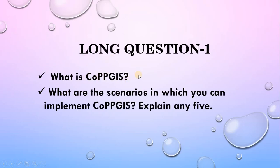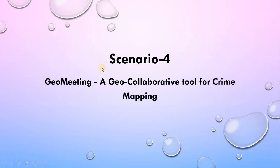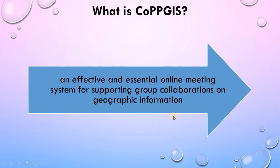My first question is about what is CopyBJS — I have discussed it already in another video, so in this video I am going to talk about the better scenarios in which I can implement CopyBJS. The scenarios for CopyBJS implementations — I am going to talk about a collaborative scenario in which your meeting is being used as a collaborative tool for crime mapping. CopyBJS is an effective, essential online meeting system for supporting group collaborations on geographic information. CopyBJS is better implemented by GeoMeeting, which is a tool for bringing together decision makers and the general public for better decisions through an online platform.